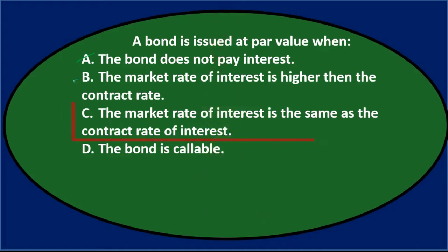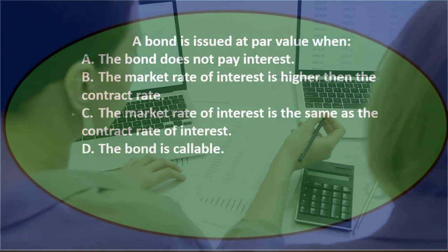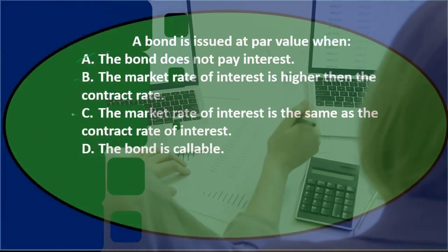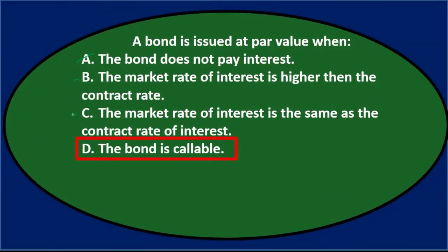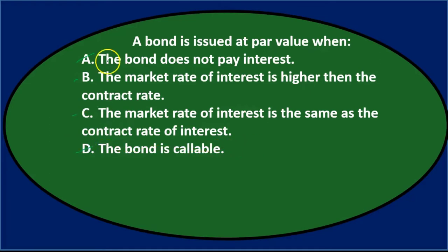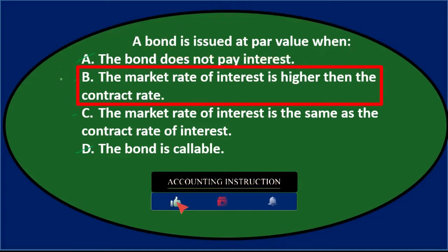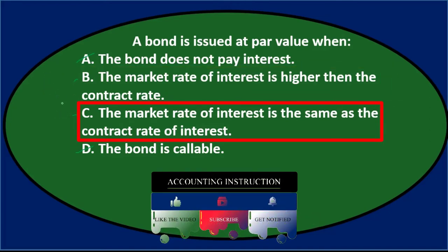Option C says the market rate is the same as the contract rate. When two options differ by just one key word, the answer is likely one of those two. Option D — the bond is callable — doesn't fit, so we can eliminate it. The correct answer is C: the market rate equals the contract rate.